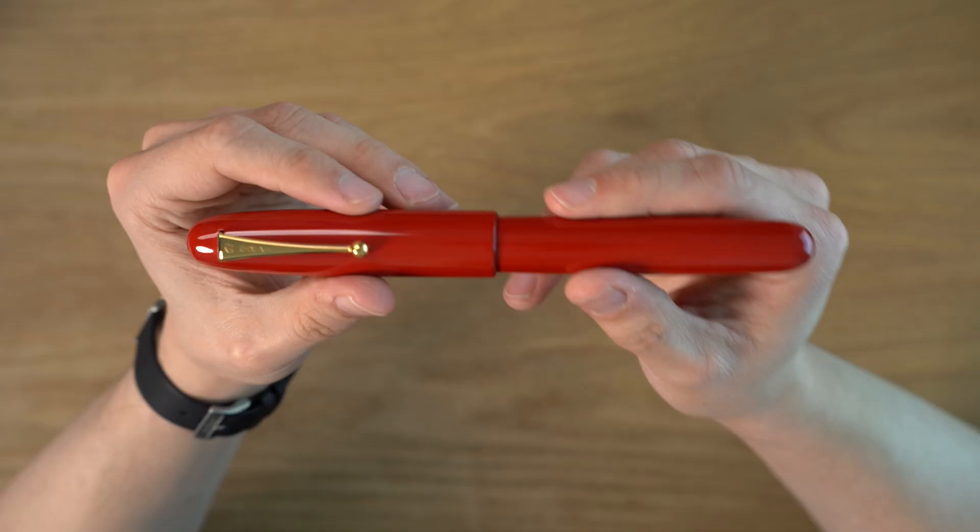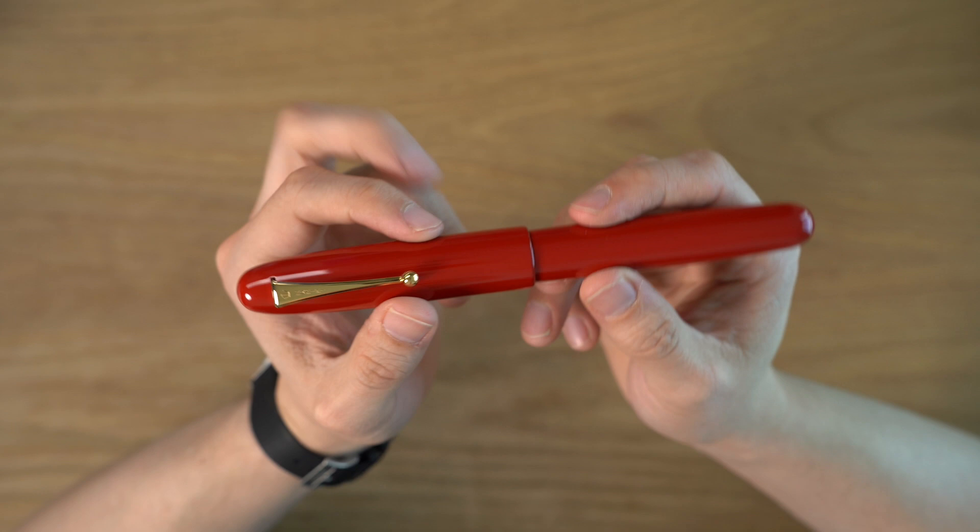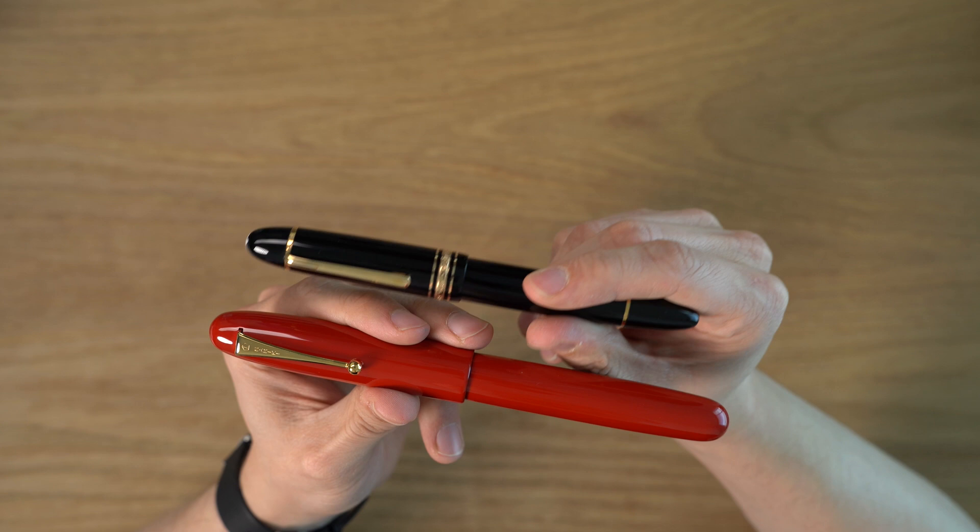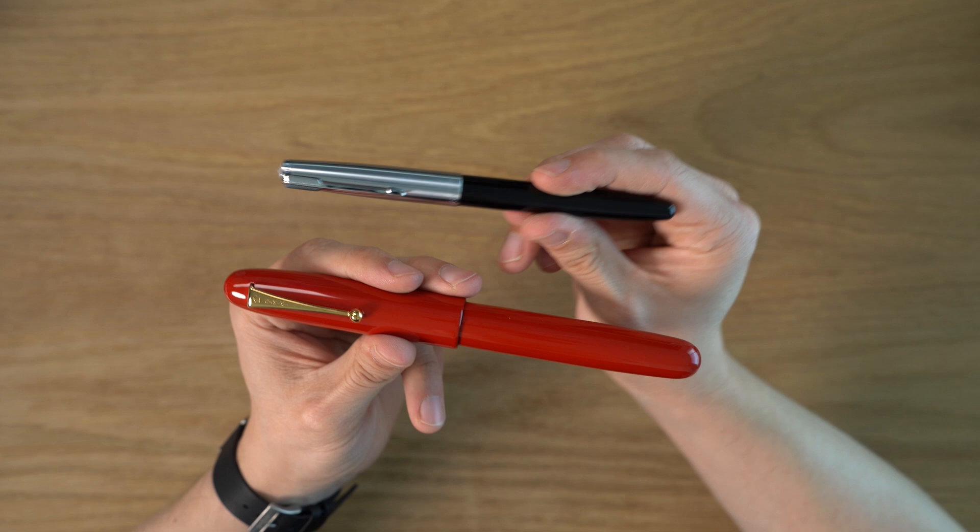Let's get on with the review. So this is the Namiki Emperor Fountain Pen. This is the largest pen that Namiki makes, the largest pen that I've ever owned. This is a huge oversized pen. As a comparison, this is a Montblanc 149, which is their biggest oversized pen. You can just see it is huge. Compared to a more normal pen, this is a Parker 51 clone. This is a gigantic pen.